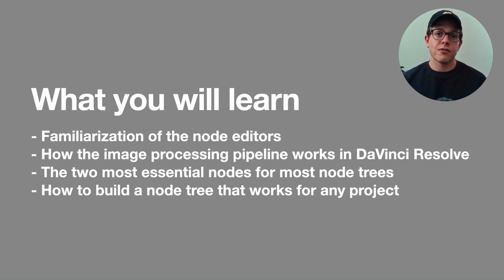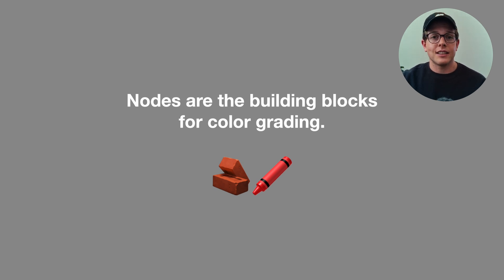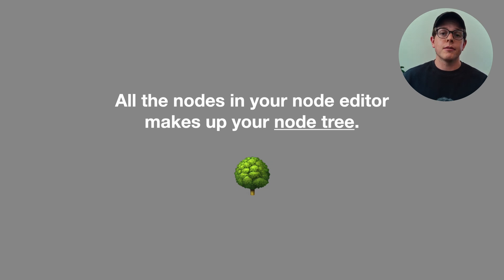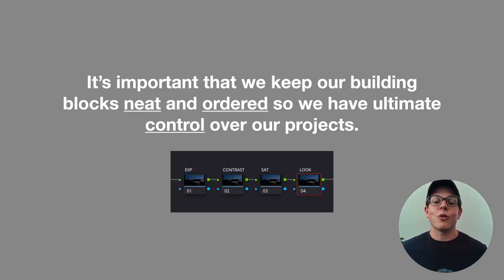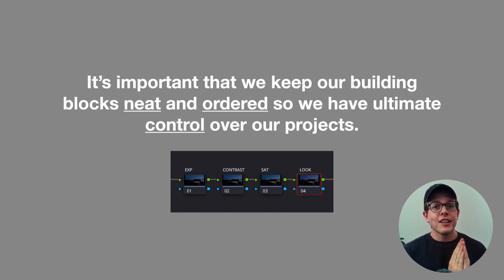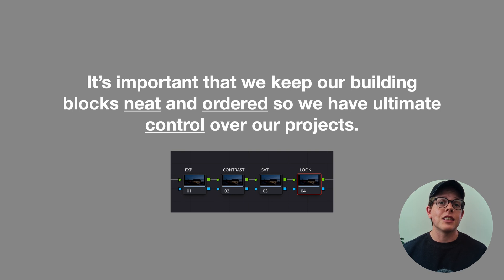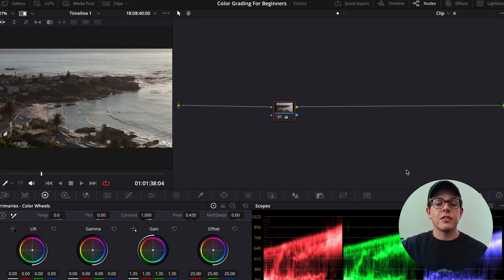Nodes are the building blocks for color grading — essentially they are the bricks we use to build our house, which is the color grade. It doesn't have to be a crazy big house; it can be really small, but you have to use nodes to build color grades. All the nodes in your node editor make up your node tree. It's important that we keep our building blocks neat and ordered so we have ultimate control. You can have 20 nodes as long as they are labeled and you understand what they're there for, because otherwise it's very hard to track what you've done or go back and fix mistakes.